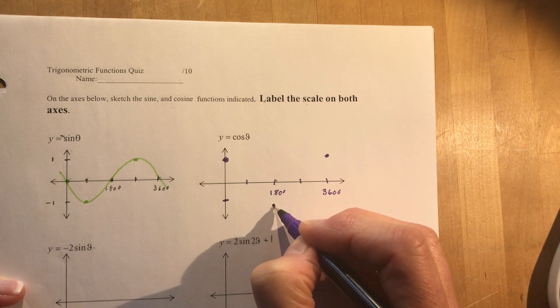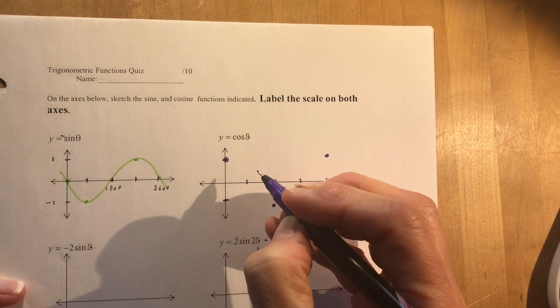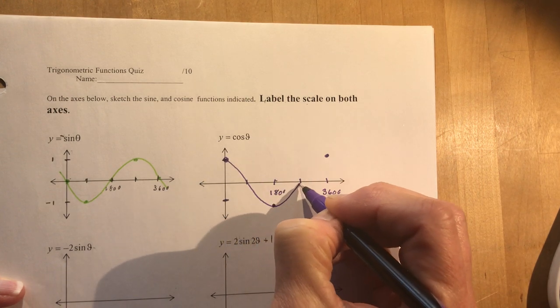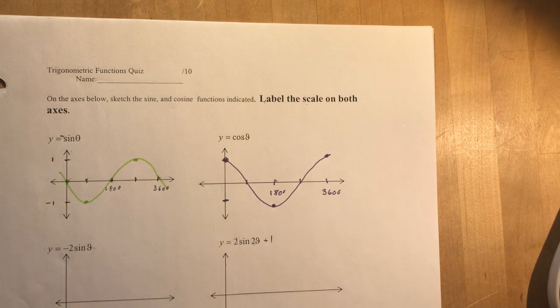And I know that the cosine starts and ends at the same height, and the lowest point is at 180, and the other two zeros. So boom, just like that. There you go. Y equals cos theta.